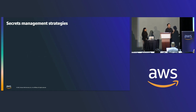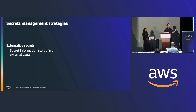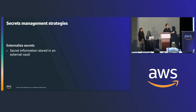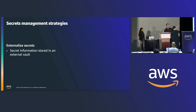In GitOps, all the manifests are meant to be in Git, but how can we put sensitive information like credentials or keys in Git in unencrypted form? That's where the challenge is. The first strategy involves storing the secret information or sensitive data in an external secret store — this can be AWS Secrets Manager or HashiCorp Vault — and having a controller running on the cluster. This controller's job is to synchronize secret information from the external store to the Kubernetes cluster. What we have in Git is just a pointer to the sensitive information.